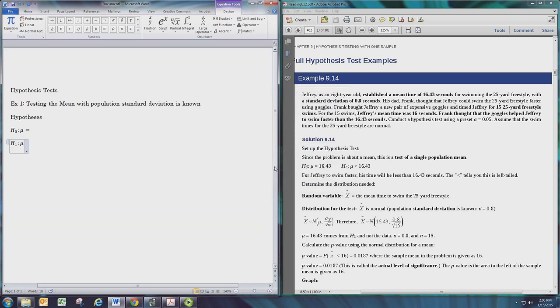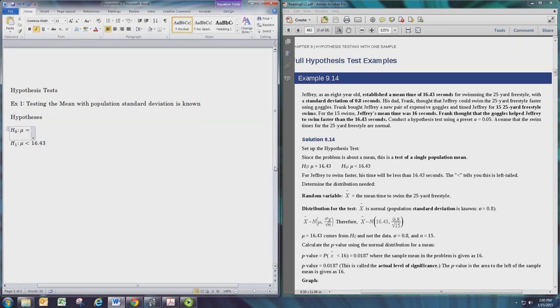In this case the claim is Frank's claim that the goggles help Jeffrey to swim faster. By Jeffrey swimming faster he would have a lower average time, thus the claim is that the average time mu with the goggles would be less than his other average time 16.43. The null hypothesis would be that there is no difference using the goggles and that the average time is still 16.43.